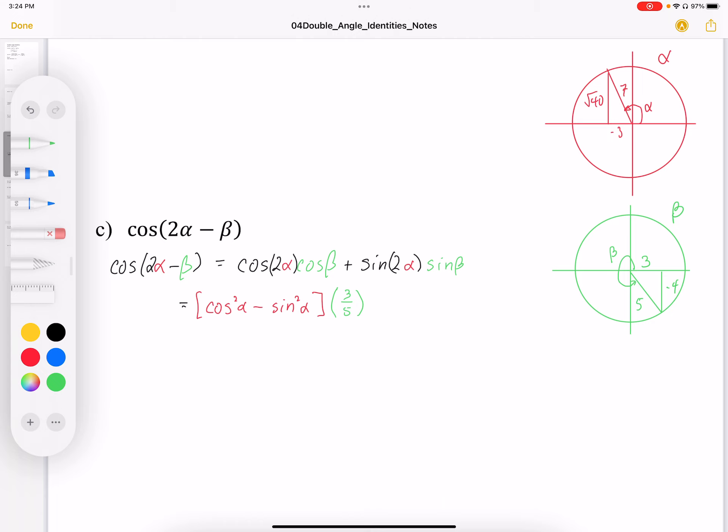Then we're going to go plus the sine beta or sine of 2 alpha. We're going to replace that with the double angle identity for sine, which is 2 sine of single alpha, cosine of alpha. So there's my double angle identity for sine. So that's that part. That's that part.